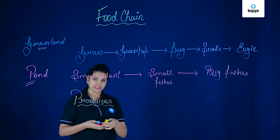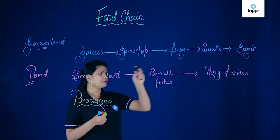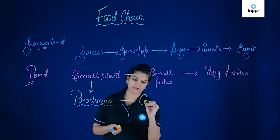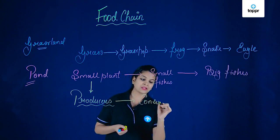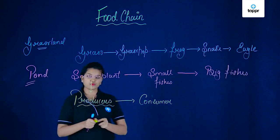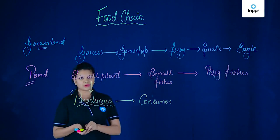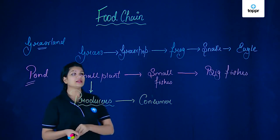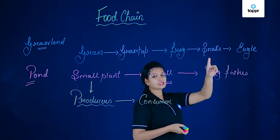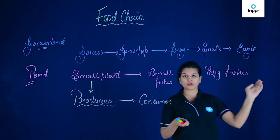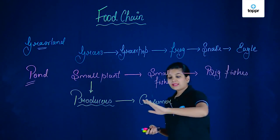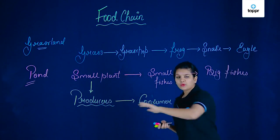The ones which are feeding upon these plants have different levels, but we collectively call them consumers, since they are consuming the other organisms. These consumers can be of different levels — this can be a primary consumer, a secondary consumer, a tertiary consumer, and so on. So these are producers which produce food, and these are the consumers which feed upon the producers.